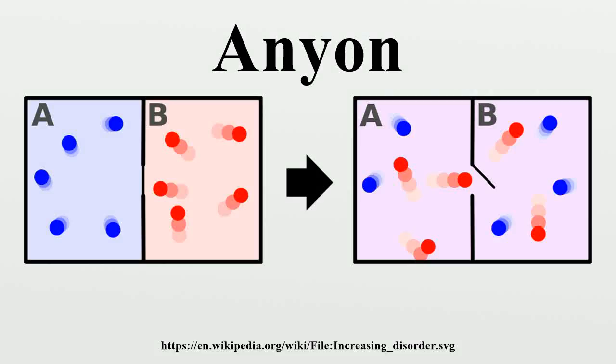In physics, an anyon is a type of quasi-particle that occurs only in two-dimensional systems. With properties much less restricted than fermions and bosons, the operation of exchanging two identical particles may cause a global phase shift but cannot affect observables.